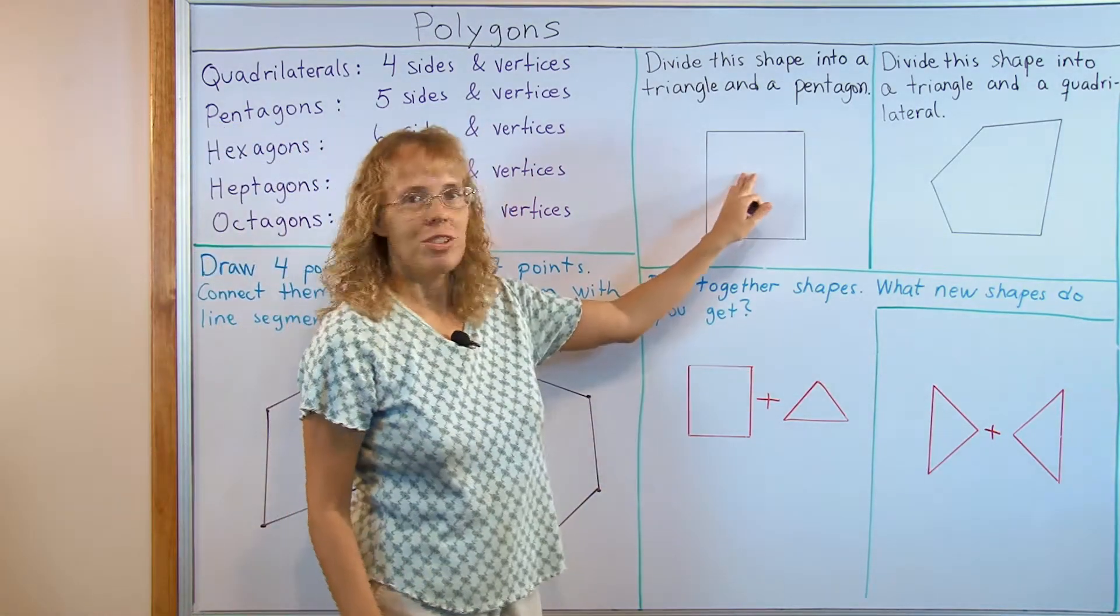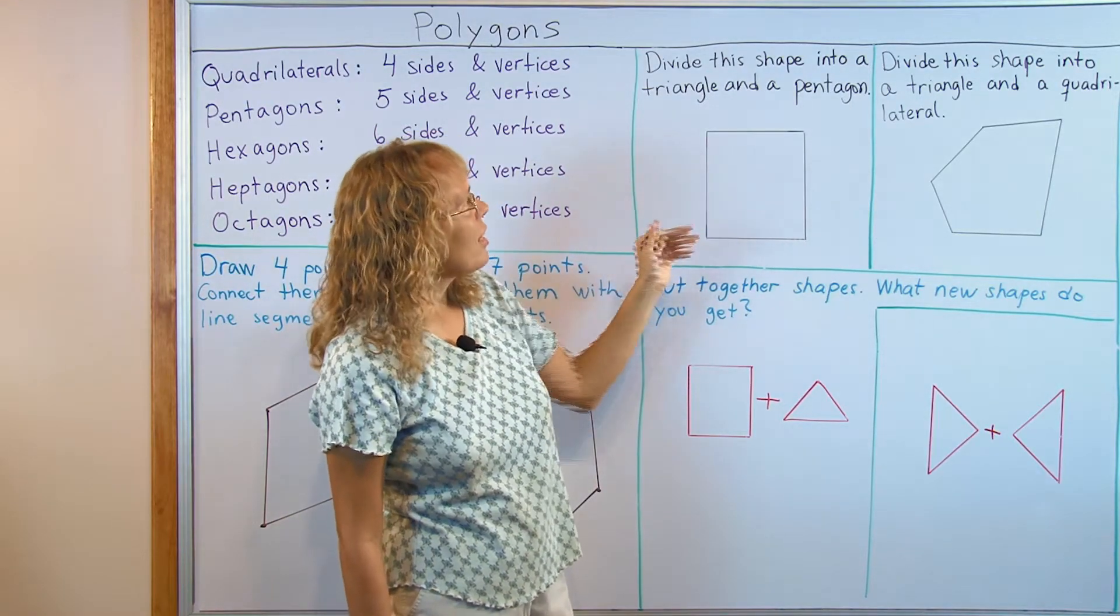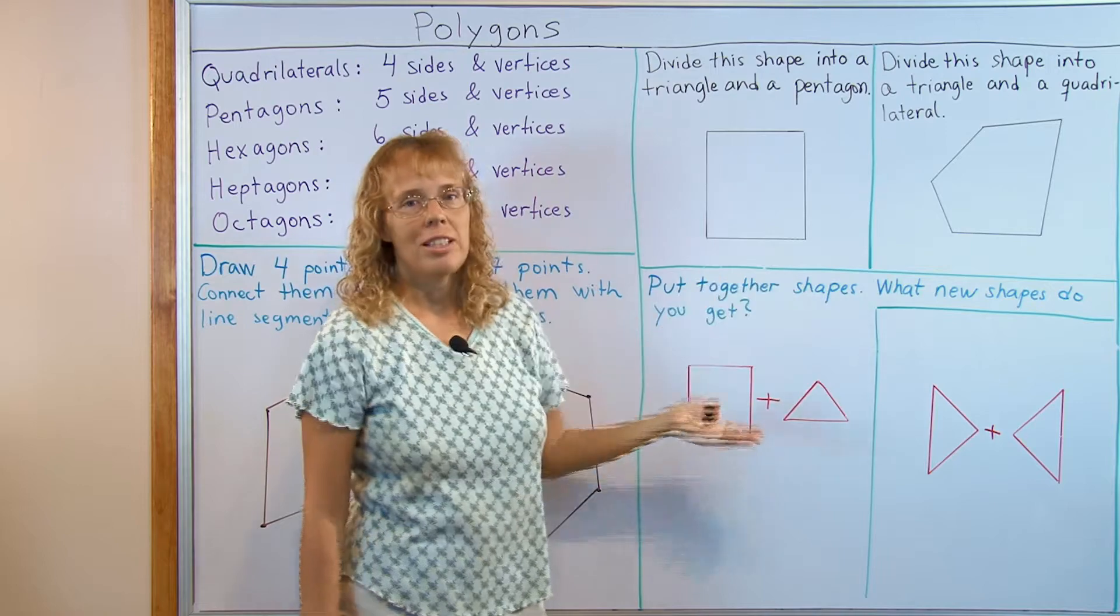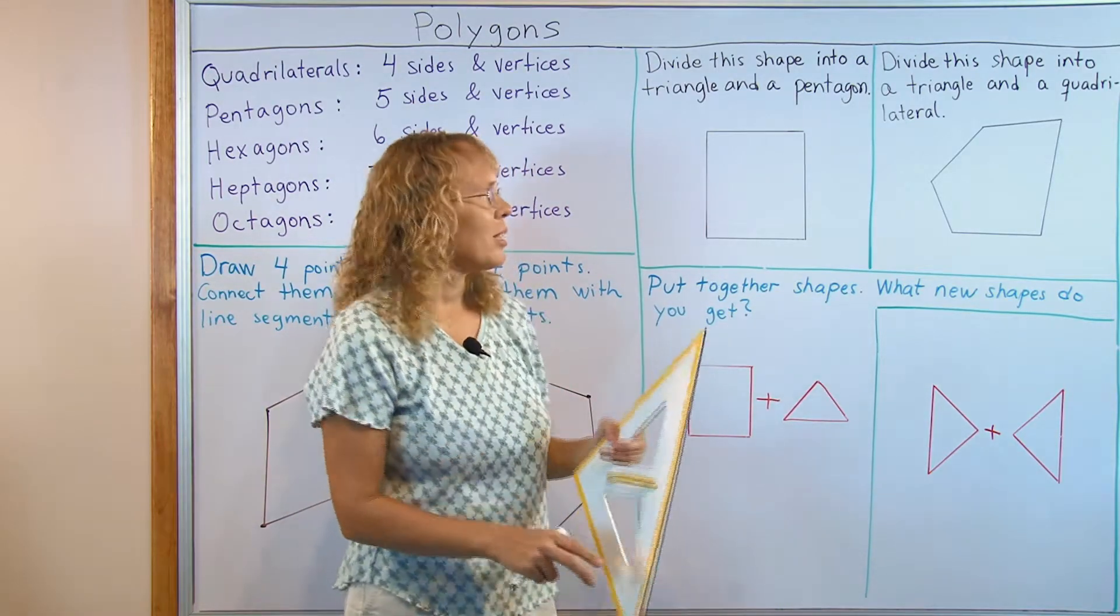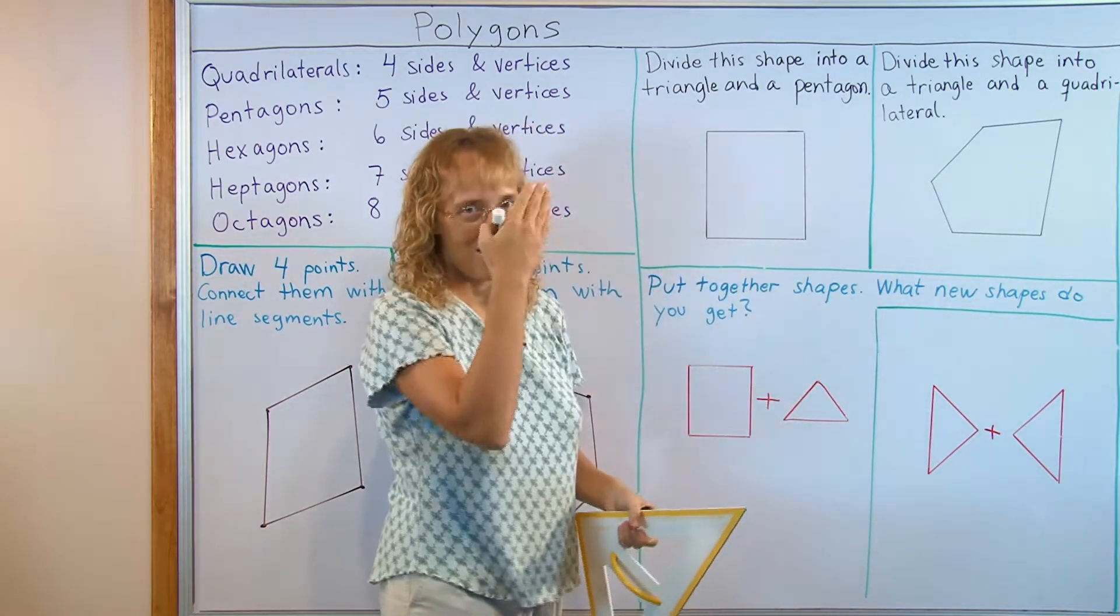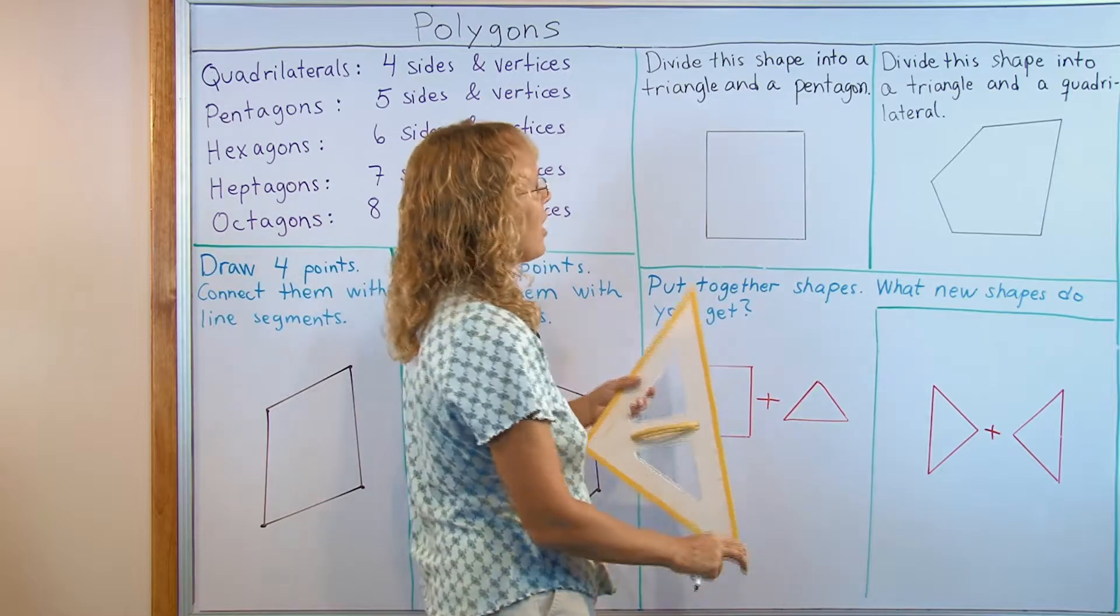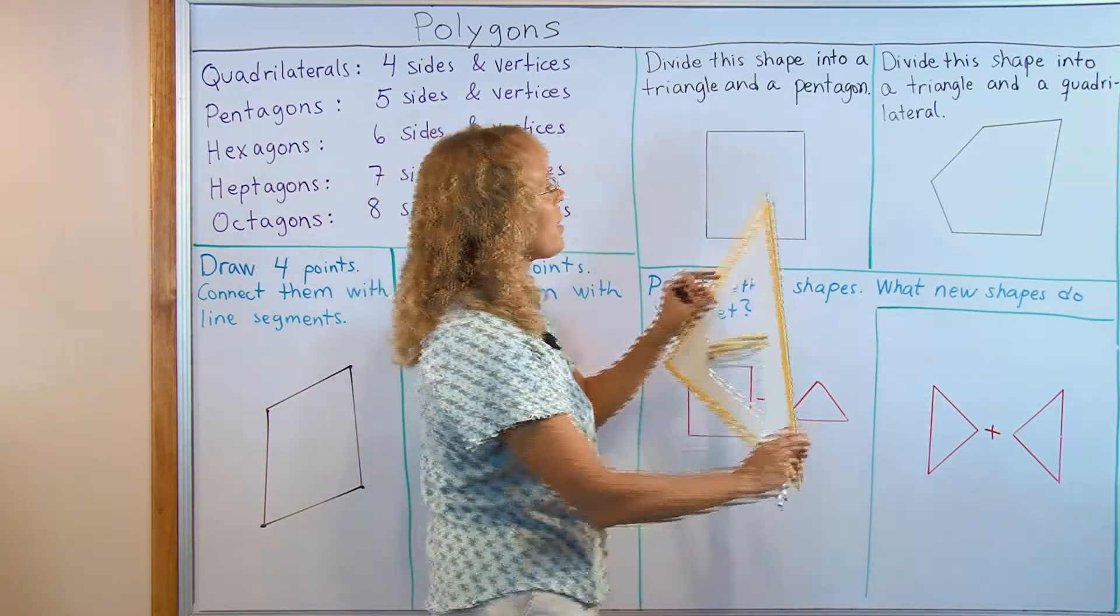Now here we go into dividing polygons into other polygons. Divide this shape into a triangle and a pentagon and that's not totally obvious as to how it should be done because if you just draw a line, and the idea is to use one line segment to do this, with one line segment divide this shape into a triangle and a pentagon.